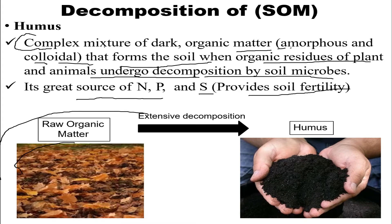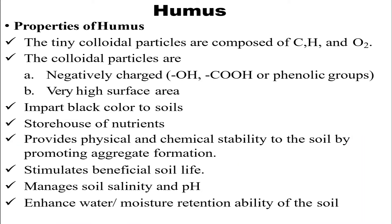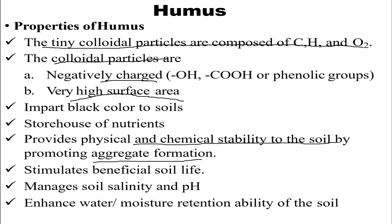As you can see, this is a simple conversion where raw organic matter gets slowly and steadily converted to humus through extensive decomposition. Humus consists of tiny colloidal particles composed of carbon, hydrogen, and oxygen. These colloidal particles are negatively charged and have a very high surface area. They also impart a black color to the soils.